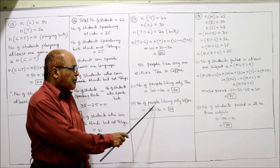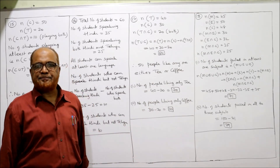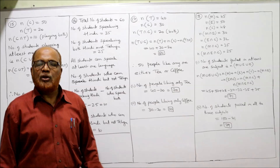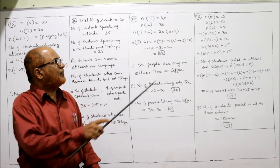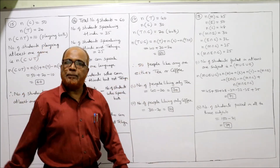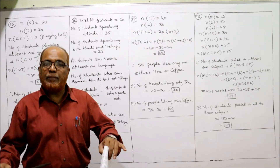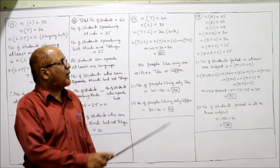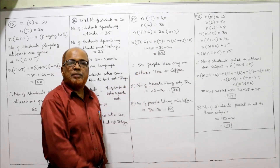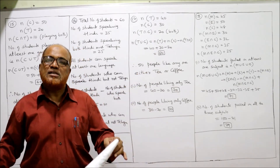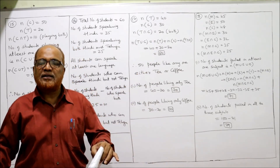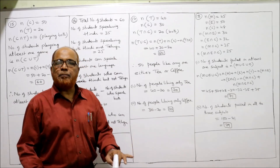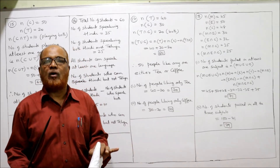Similarly, number of people liking only coffee: total people who like coffee is 30, and 20 people like both tea and coffee. So 30 minus 20 equals 10. Therefore, 10 people like only coffee, not tea.